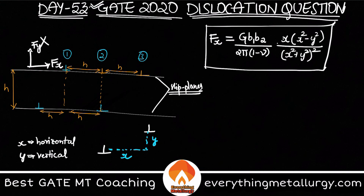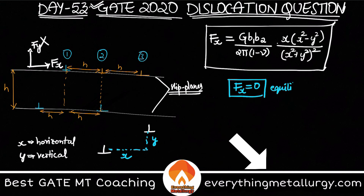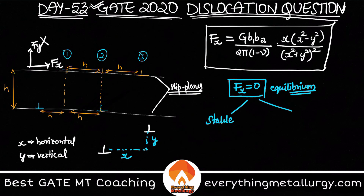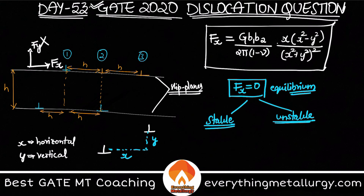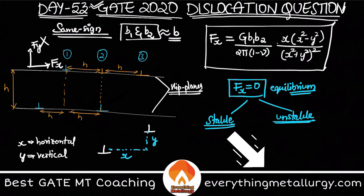Equilibrium is when Fx equals zero — the dislocations are not moving apart. We have two types: stable and unstable equilibrium. I'm considering dislocations of the same sign here. For same-sign dislocations d1 and d2 with Burgers vector b, if opposite sign then b2 would be minus b.